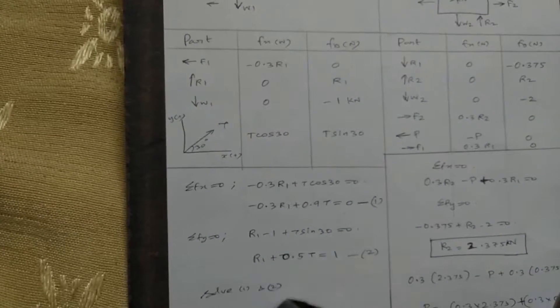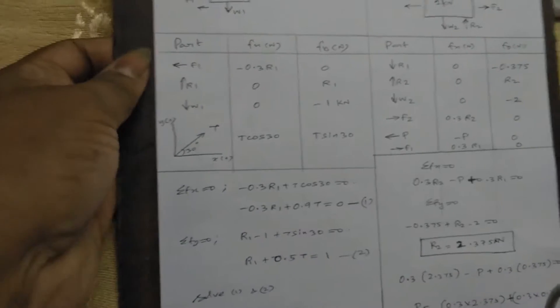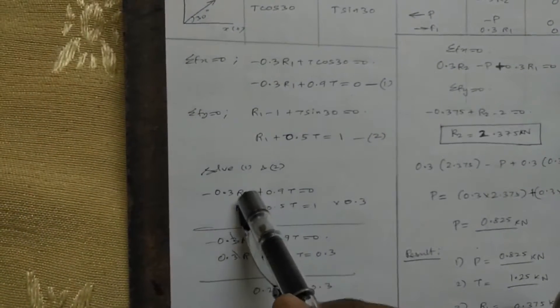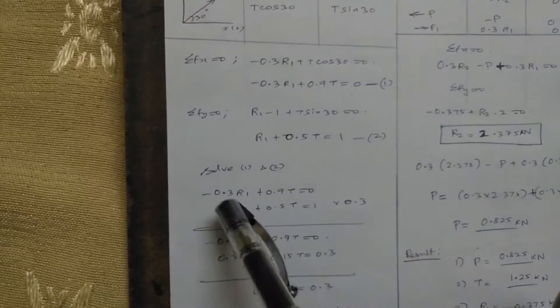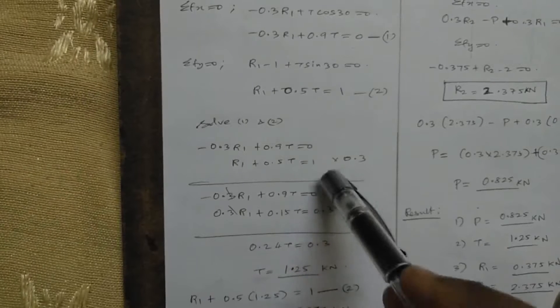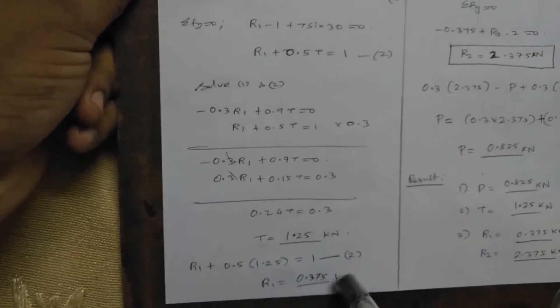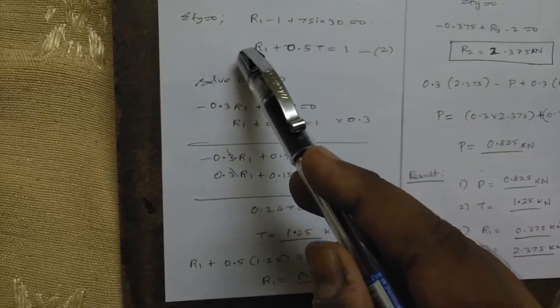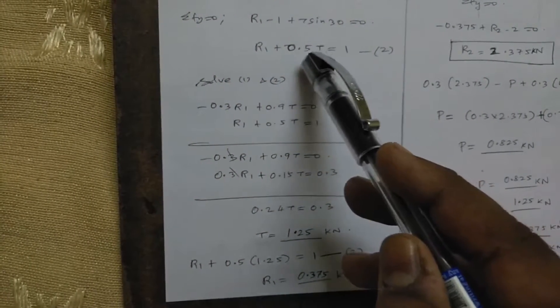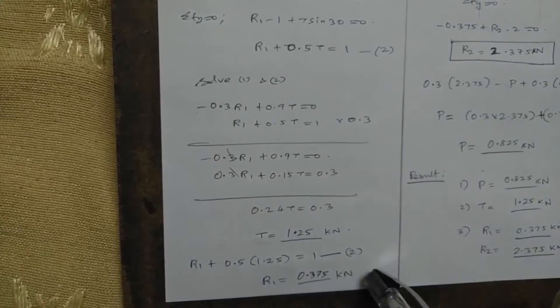Solving the two equations: multiply and add to eliminate R1. You get 0.3 times 1 equals 0.3, and 0.5 times 0.3 equals 0.15. Adding gives 0.9 plus 0.15 equal to 1.05, and the value of T equals 1.25 kilo newton. Substituting back into the second equation: R1 plus 0.5 T equal to 1, giving the value of R1 equal to 0.375 kilo newton.